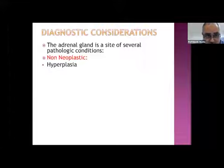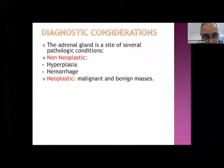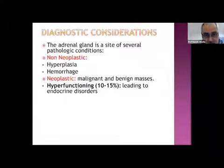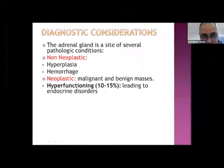The adrenal gland is the site of several pathological conditions. It may be non-neoplastic, like hyperplasia or hemorrhage, or it may be neoplastic, whether malignant or benign masses. A minority — about 10 percent of all suprarenal masses — are hyper-functioning, and this may lead to endocrine disorders.